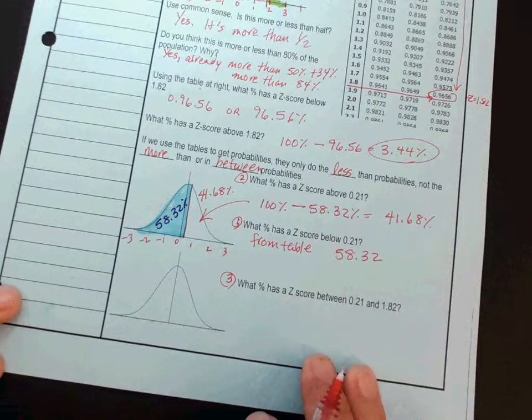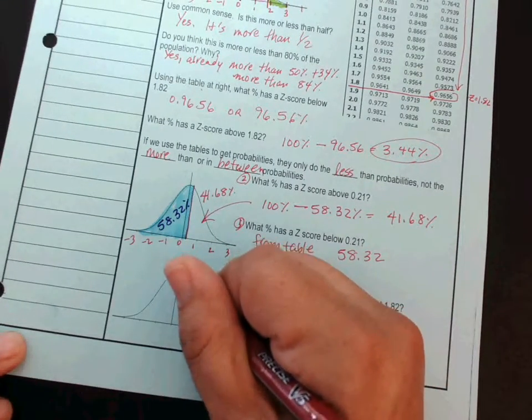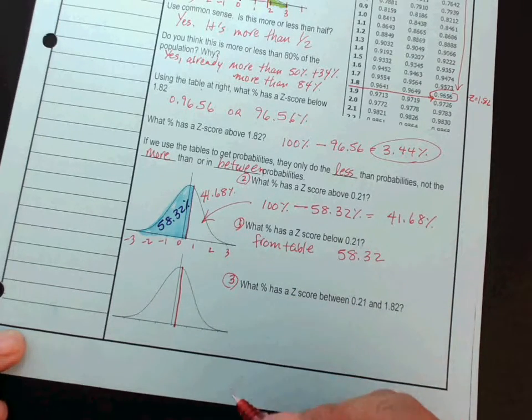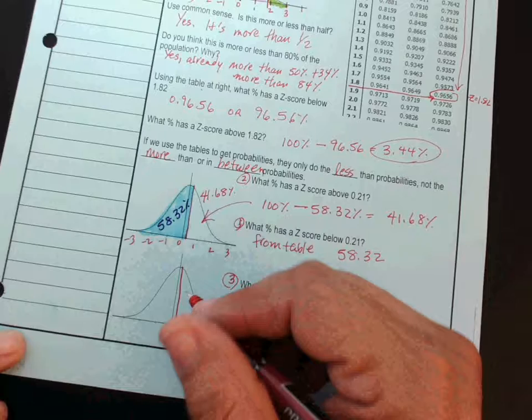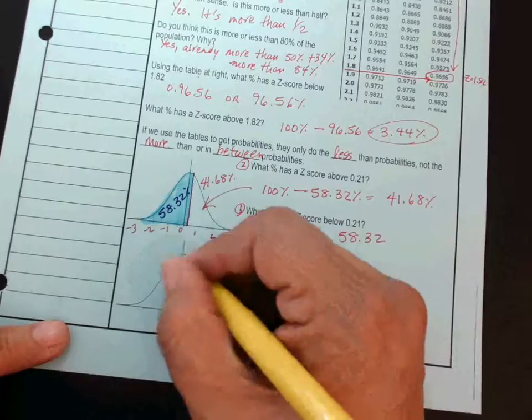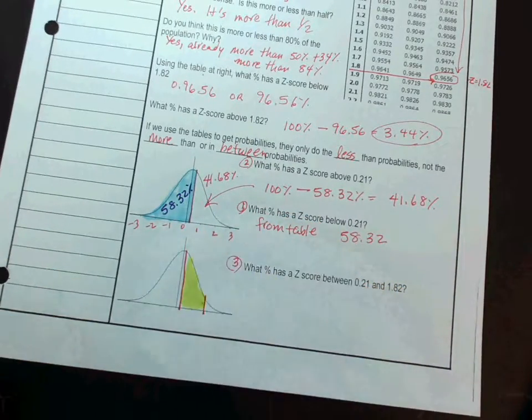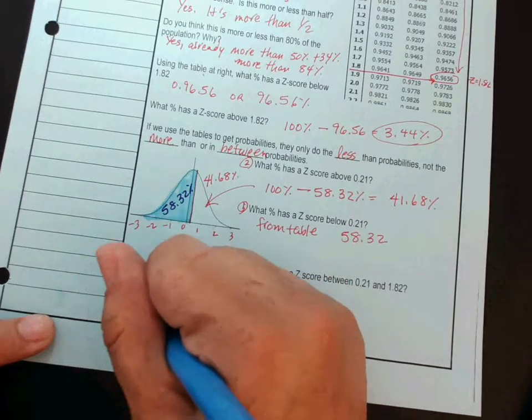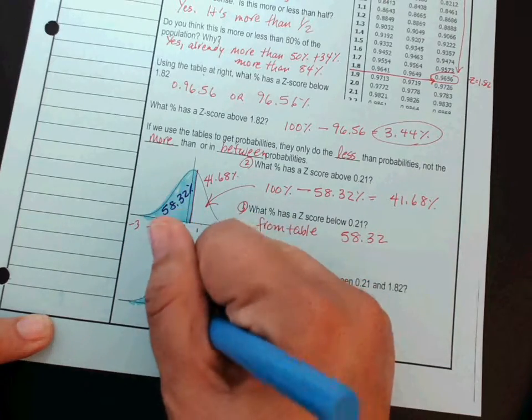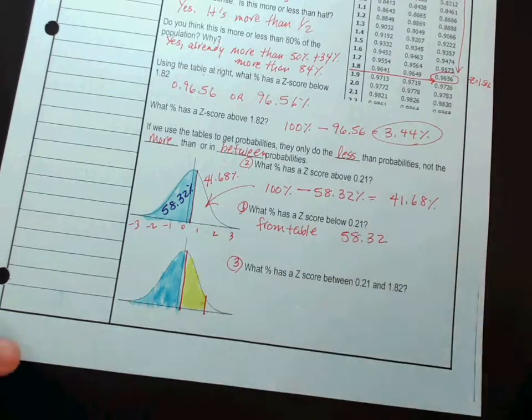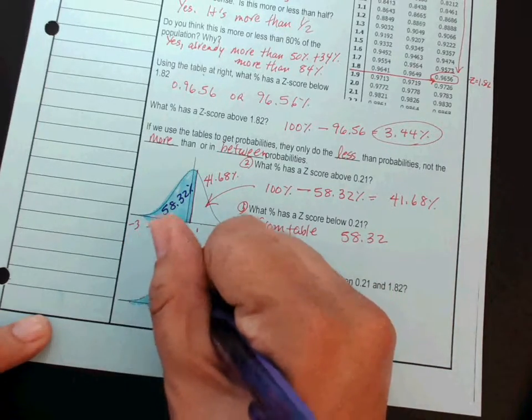Then, what is in between 0.21? So, I'm going to use this drawing for that. So, I'm looking for this area right here. Well, I do know this. I know that this area right here is the same as the blue area above. And, what did we say that was? That's 58.32%.